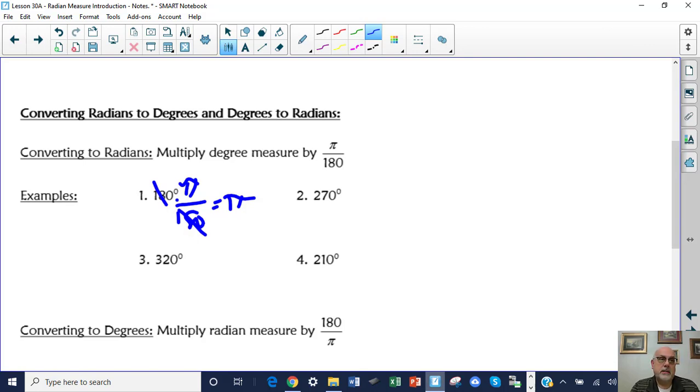Pi radians is 180 degrees. 270 times pi over 180, if you get your calculator and go into fraction mode and put 270 over 180, you'll get 3 over 2. And you always stick the pi in the numerator, okay. So it's important you have to reduce that fraction, 270 over 180.